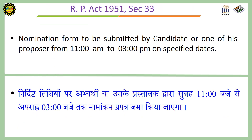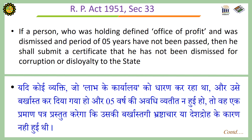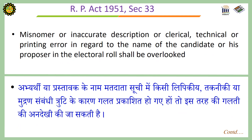Under Section 33 of RP Act 1951, the nomination form is to be submitted by the candidate or one of his proposers from 11 am to 3 pm on specified dates. If a person who was holding a defined office of profit was dismissed and a period of 5 years has not passed, he shall submit a certificate that he has not been dismissed for corruption or disloyalty to the state. Minor or inaccurate descriptions or clerical, technical or printing errors regarding the name of the candidate or his proposer in the electoral roll shall be overlooked.